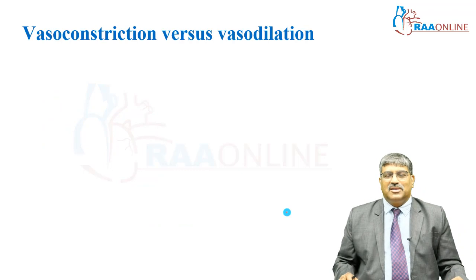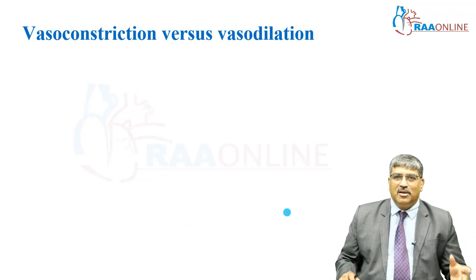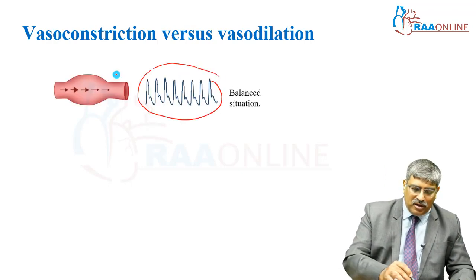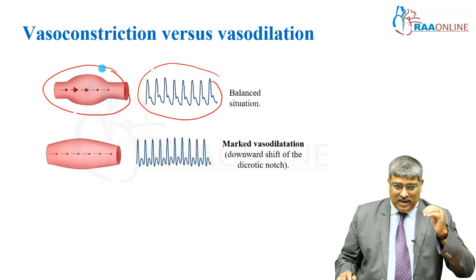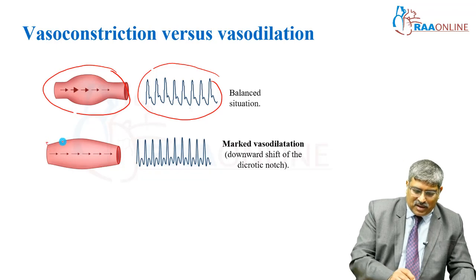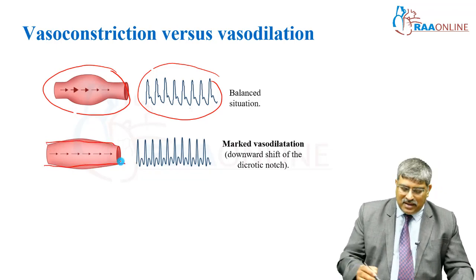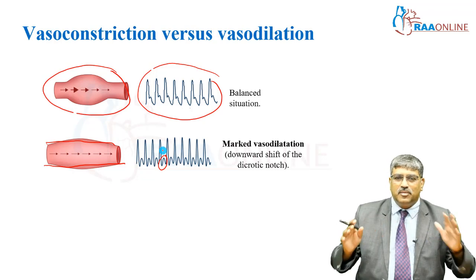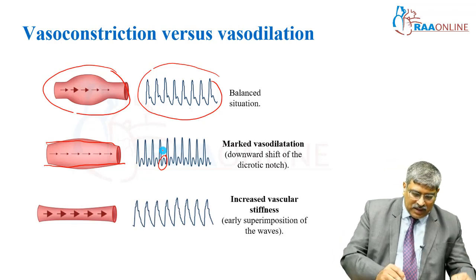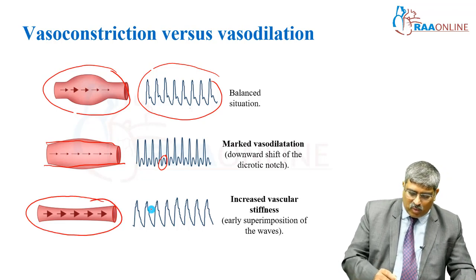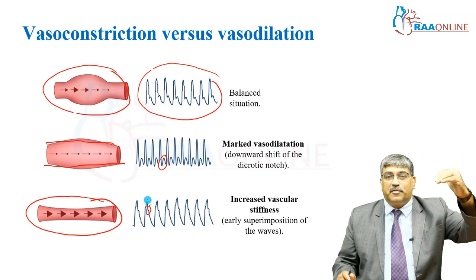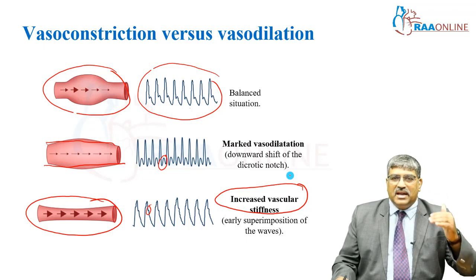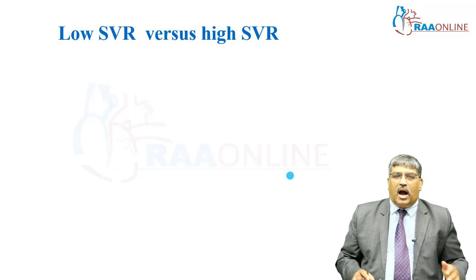Coming to another important concept in arterial waveform: whether it is a constricted waveform or a dilated waveform. This is the normal arterial waveform. In marked vasodilatation, the lumen is dilated too much and the dicrotic notch is shifted downwards, meaning the vessel is markedly dilated. When the vessel is constricted, the dicrotic notch is shifted upwards, showing increased vascular stiffness — this is the peripherally constricted waveform.